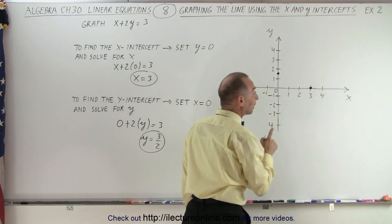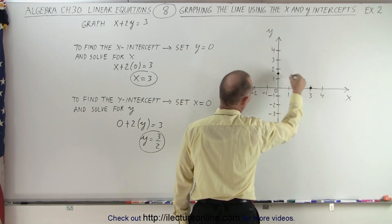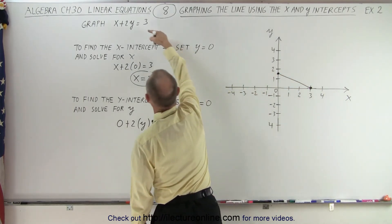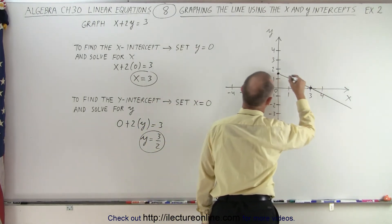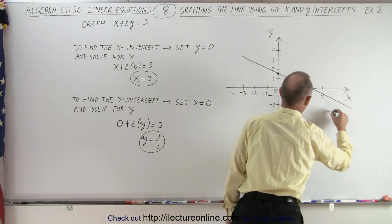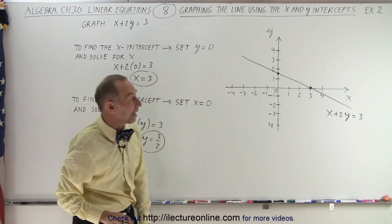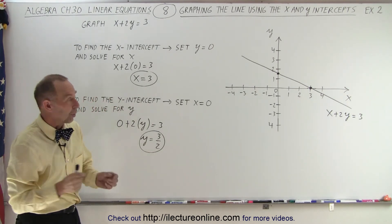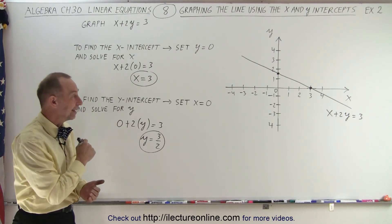There's the other point. You know that the line will cross both of those points right here and right there. When we connect those two points, we have the graph of the line represented by this equation. We can then extend the line in both directions. And that's the line represented by x plus 2y equals 3. We found that line by finding the two points on the x and y-axis — the x and y-intercepts. And that is how it's done.